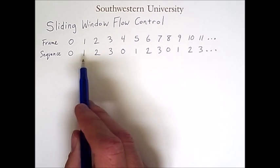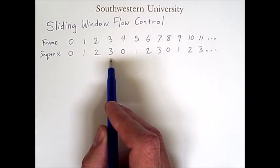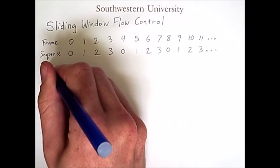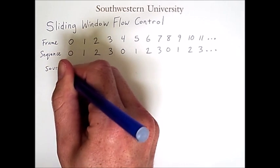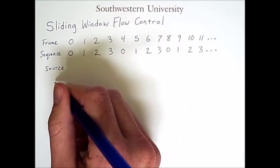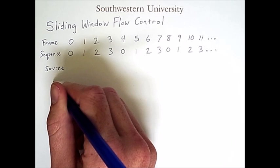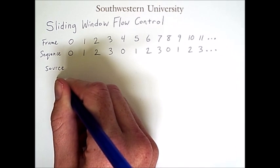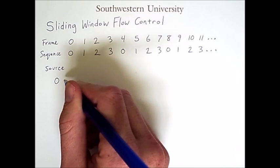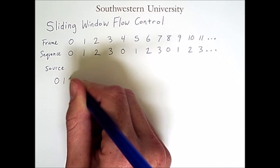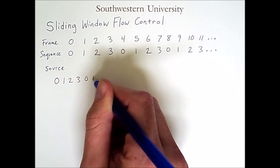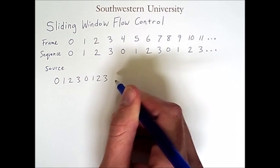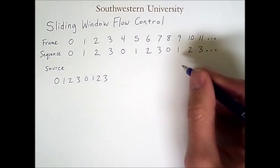I'll depict the source as having a list of frame sequence numbers it wants to send. So it wants to send frames with sequence numbers 0, 1, 2, 3, 0, 1, 2, 3, and so on to some receiver or destination.